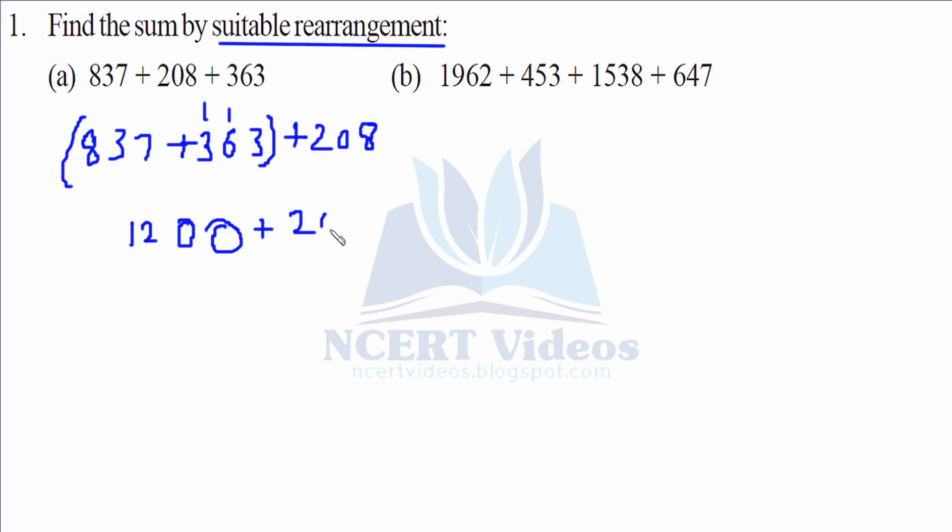Now it is very easy to add 1200 with 208. It would be simple 1408. So this is all about suitable rearrangement. We get 1408.